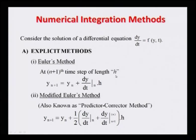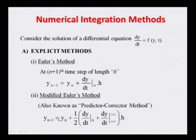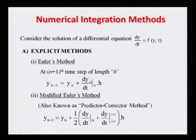The basic Euler method has problems, so the modified Euler method was proposed — also known as the predictor-corrector method. Instead of the second term in the first Euler method, it is replaced by two terms: dy/dt at the nth instant plus dy/dt at the (n+1)th instant. We take the average of these two and multiply by h, giving a more accurate solution.